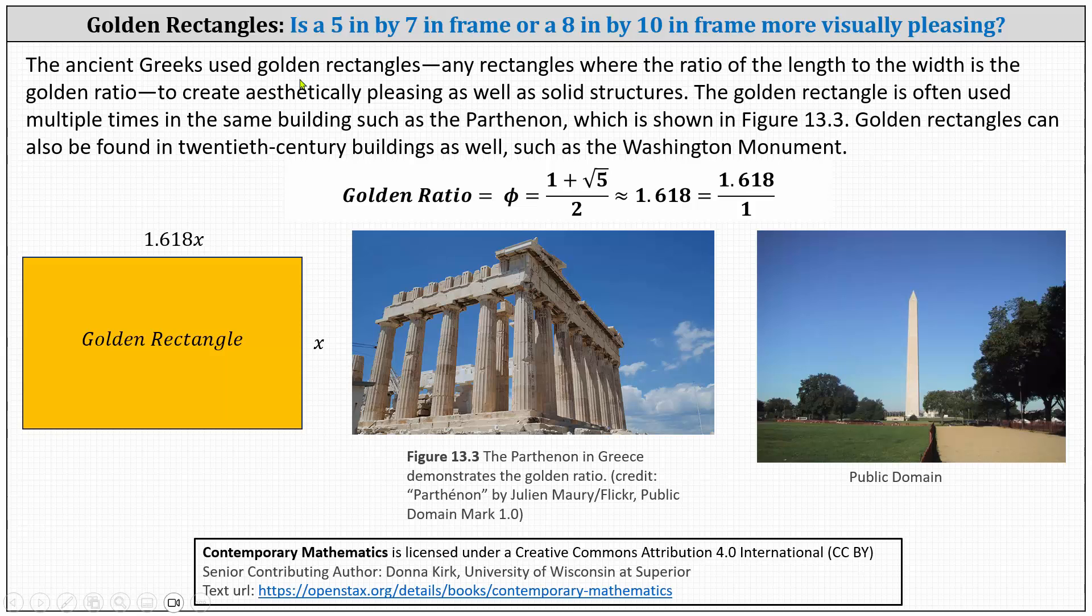The ancient Greeks used golden rectangles, which are any rectangles where the ratio of the length to width is the golden ratio, to create aesthetically pleasing as well as solid structures.